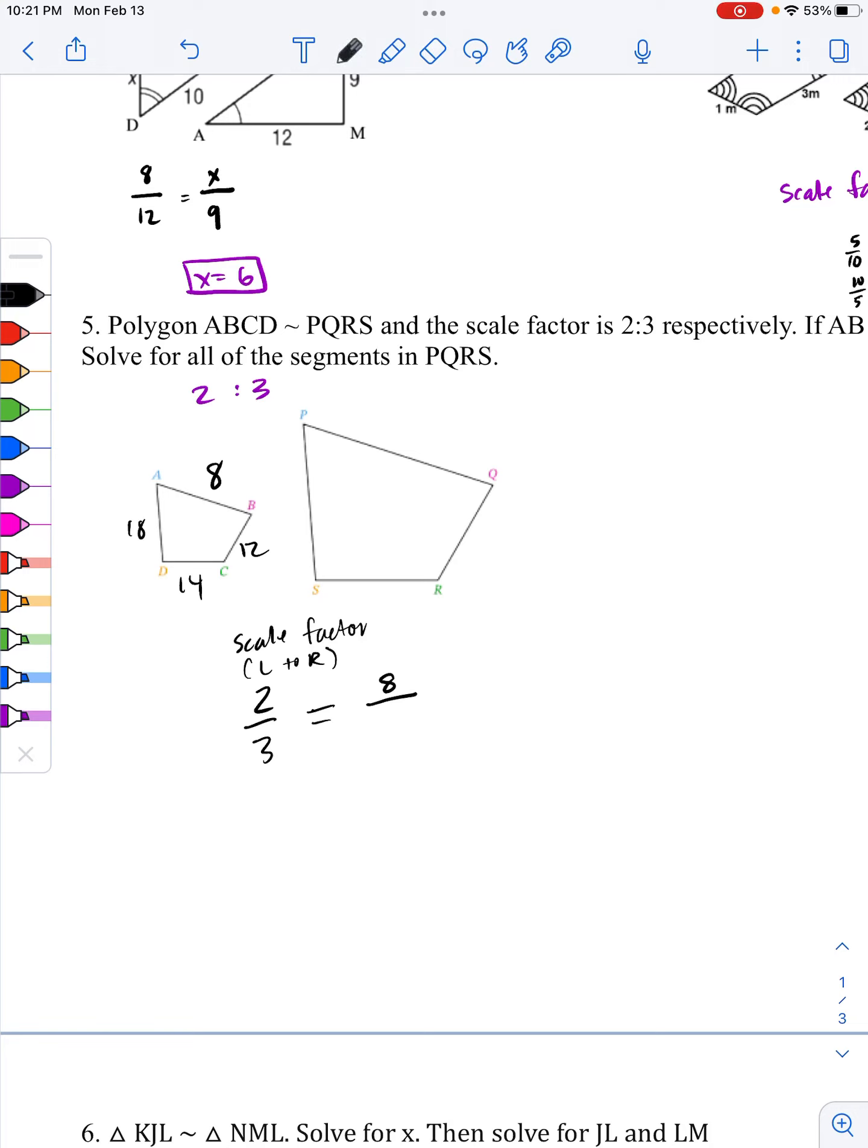And you're going to use that and set it equal to 8 over PQ. If you want to use a variable, you absolutely could. Just make sure you don't use the same variable over and over. I would use, personally use WXYZ. But for the sake of it, let's just use X really quick.